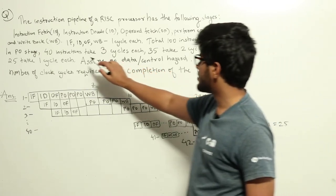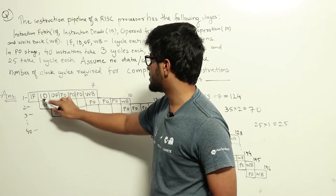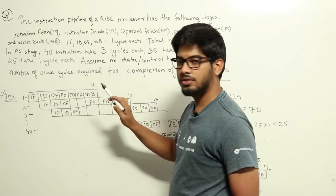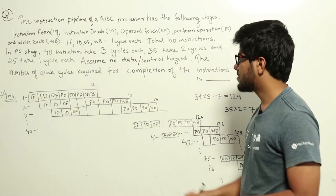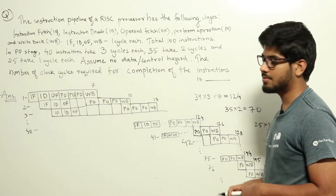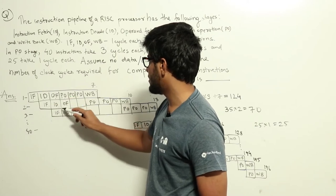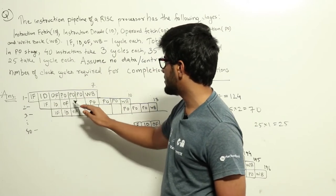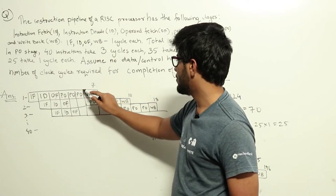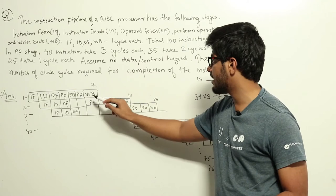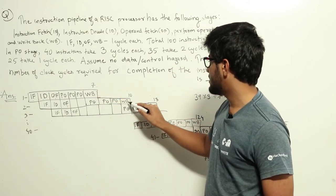Let's start with instructions where the perform operation stage takes three cycles. The first stage is instruction fetch, then instruction decode, operand fetch, then perform operation which takes three cycles, and then write back taking one cycle. So the total for the first instruction is seven cycles. From the second instruction onwards we can use pipelining, but perform operation for the second instruction can only start after perform operation for instruction one is complete — that adds three more cycles plus write back, making ten cycles.